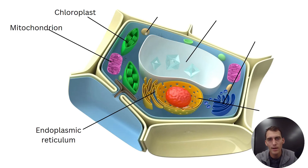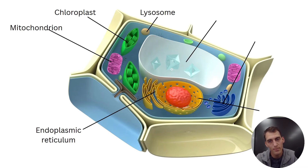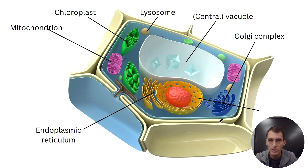The big compartment in the middle with a whole lot of water and nutrients that exerts turgor pressure on the plant cell wall is called the central vacuole. The system of membranes that looks a bit like a WiFi symbol, whose job is to ship products where they need to go — usually receiving them from the endoplasmic reticulum — is the Golgi complex. And the central structure with a membrane continuous with the endoplasmic reticulum, which stores the cell's DNA, is the nucleus.